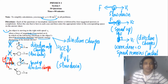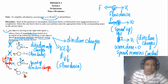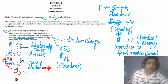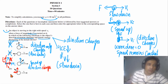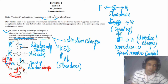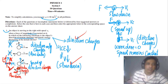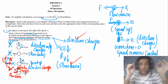Option D: the force acts at an angle such that when resolved into components, one component is opposite to the direction of motion causing the object to slow down, and the other component changes the direction. Both conditions are satisfied — direction changes and speed decreases — so option D is the correct answer.